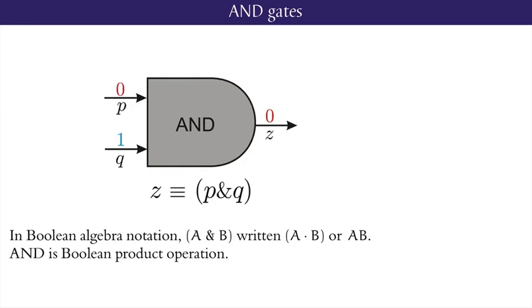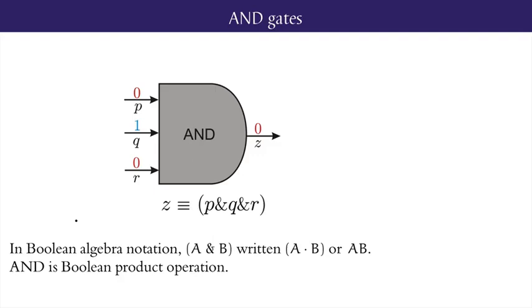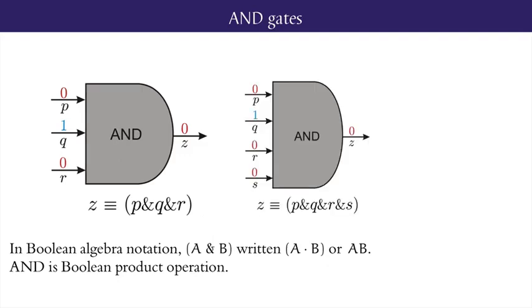Equivalently, the output is zero if and only if one or more of the inputs is zero. AND gates with more than two inputs behave analogously. The output is one if and only if all the inputs are one, whether it be three inputs or four inputs. Equivalently, the output is zero if and only if one or more of the inputs is zero.